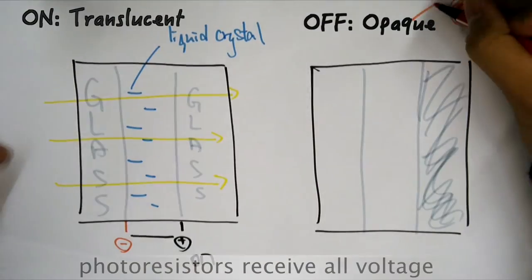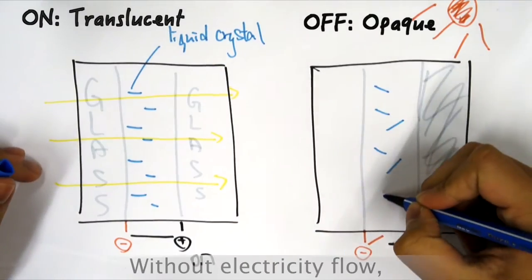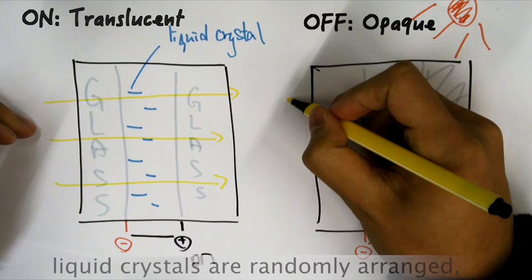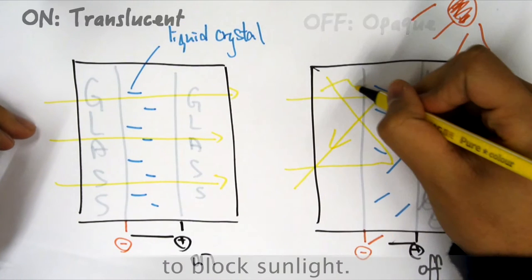During a sunny day, photoresistors receive voltage from solar cells without electricity flow. Liquid crystals are randomly arranged to block sunlight.